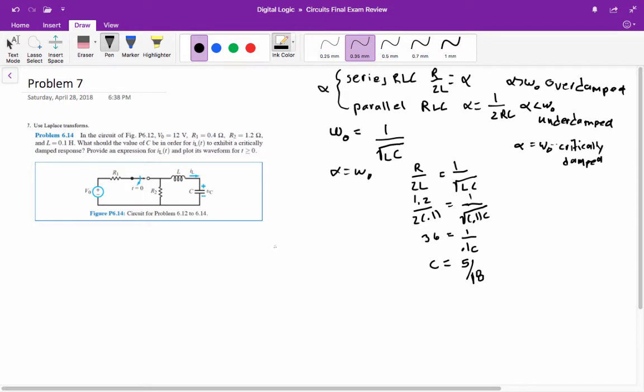For this kind of problem, we need to know what IL at 0 minus and what VC at 0 minus is. At 0 minus, the inductor is acting like a short circuit, and the capacitor is acting like an open circuit. Since the capacitor is acting like an open circuit, there is no current flowing through the inductor. So IL at 0 minus equals 0. That also equals IL at 0 because the current through an inductor cannot change instantaneously.